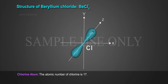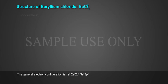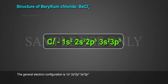Chlorine atom. The atomic number of chlorine is 17. The general electron configuration is 1s2, 2s2, 2p6, 3s2, 3p5.